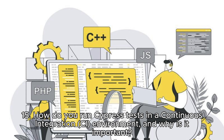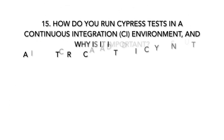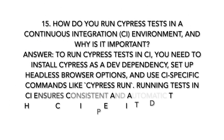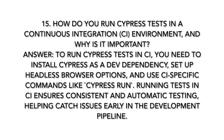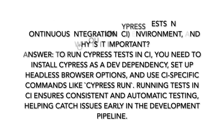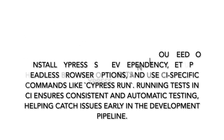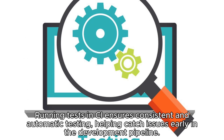Question 15: How do you run Cypress tests in a continuous integration (CI) environment, and why is it important? To run Cypress tests in CI, you need to install Cypress as a dev dependency, set up headless browser options, and use CI-specific commands like 'cypress run'. Running tests in CI ensures consistent and automatic testing, helping catch issues early in the development pipeline.